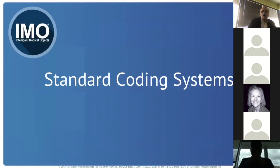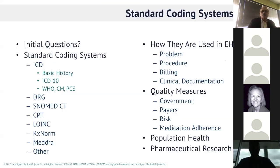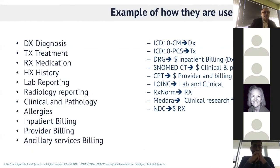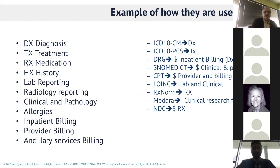We talked about the standard coding systems — ICD, DRG, SNOMED — how they were used and where they're located. We'll repeat that a bit more later. The most important part I want to express is the cancer framework I identified: DX for diagnostics, TX for treatment, RX for medications, and HX for history. These are much bigger silos, with subsets inside them.